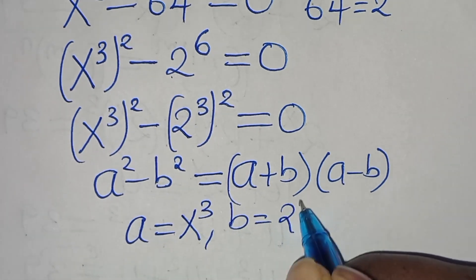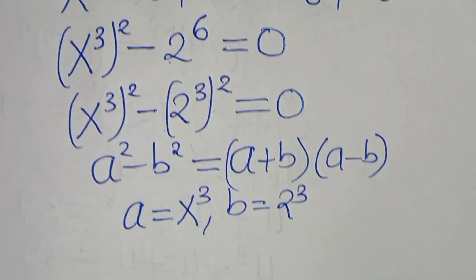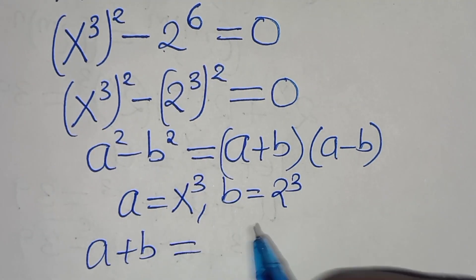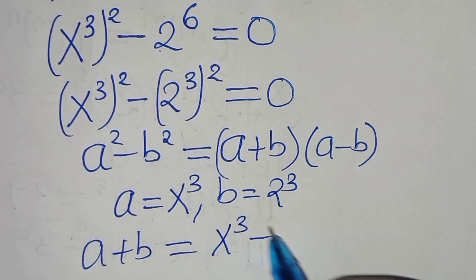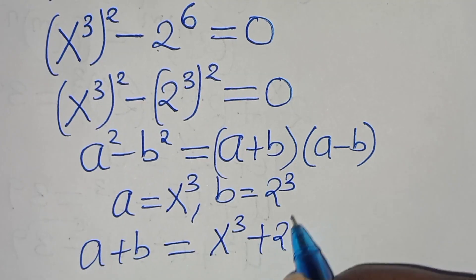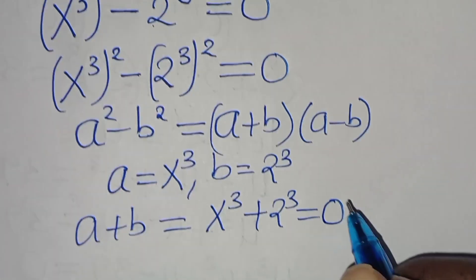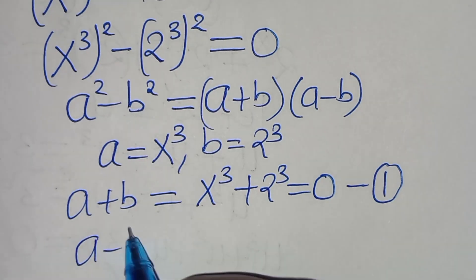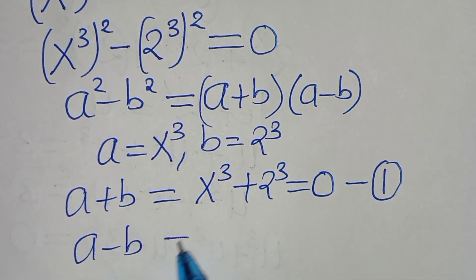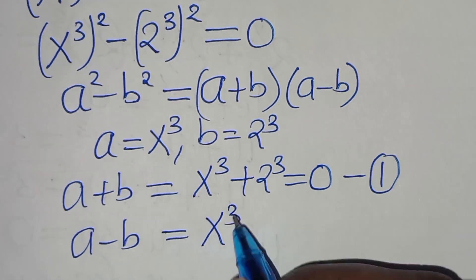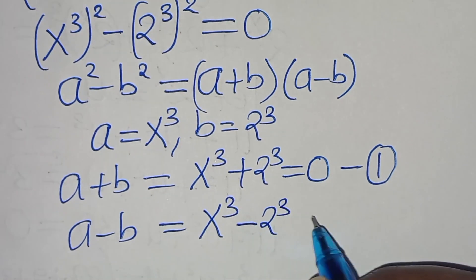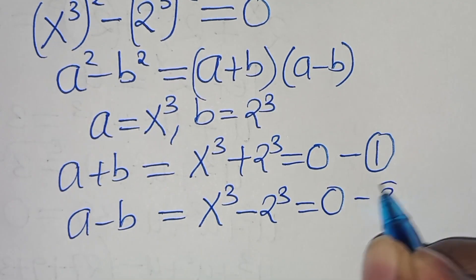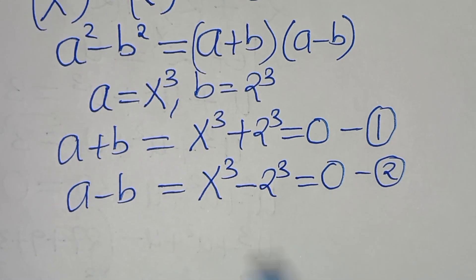Applying this identity, we have a equal to x to the power of 3 and b equal to 2 to the power of 3. So a plus b gives us x to the power of 3 plus 2 to the power of 3 equals 0 — call this equation 1. And a minus b gives us x to the power of 3 minus 2 to the power of 3 equals 0 — call this equation 2.